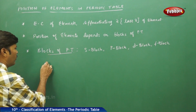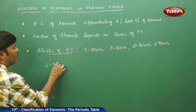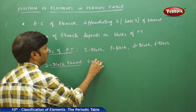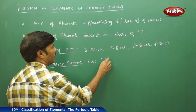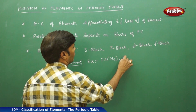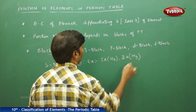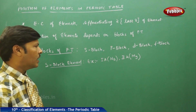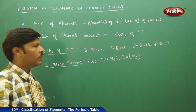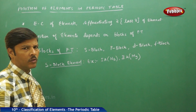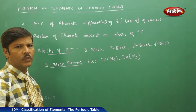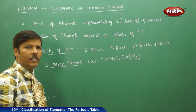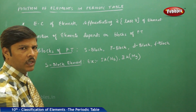For s-block elements, we can take the example of 1A group — sodium — and 2A group — magnesium. Sodium and magnesium belong to the s-block because the last electron of sodium (the 11th electron) and the last electron of magnesium (the 12th electron) enter into their respective s orbitals. This will become clear when we write the electronic configuration.